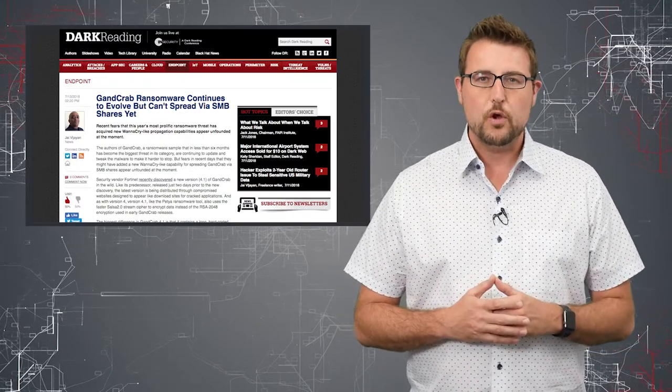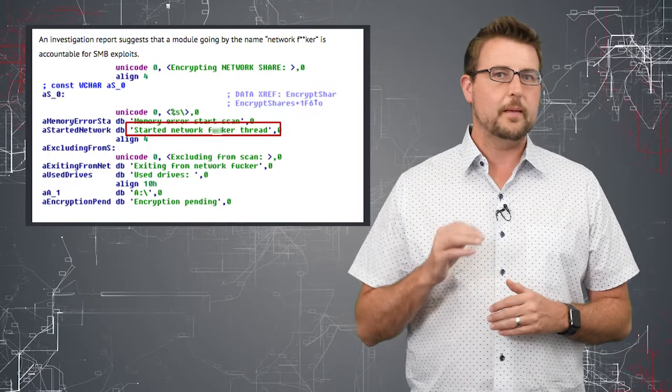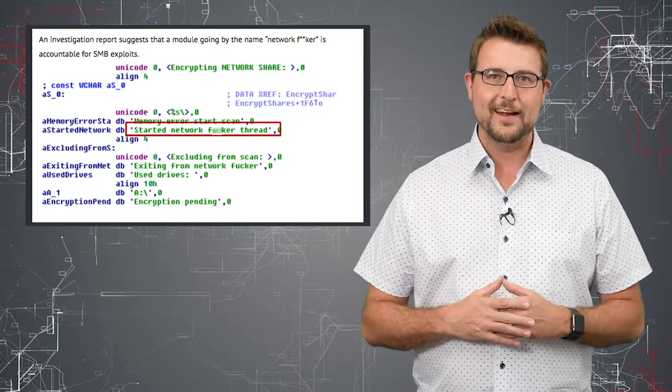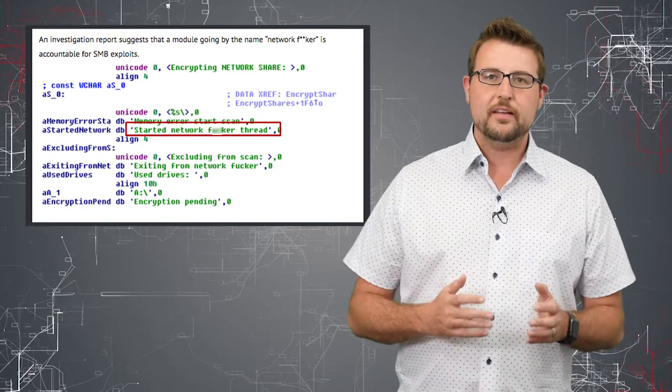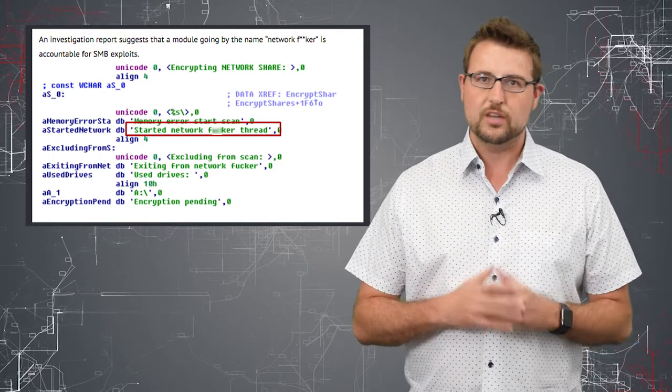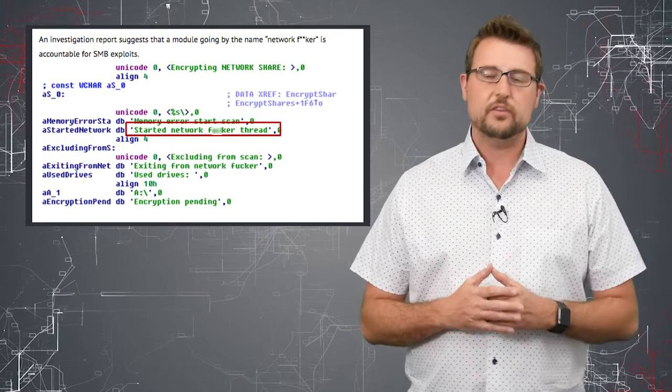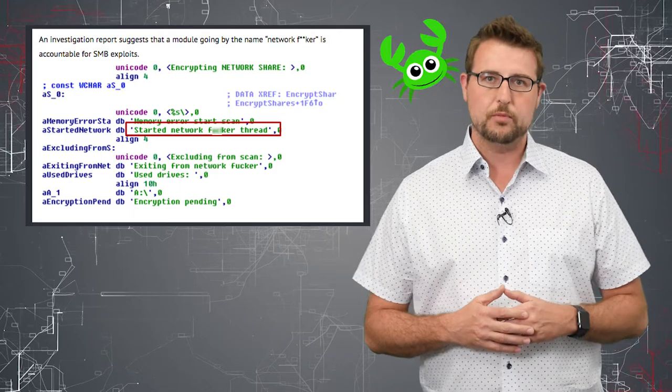While some researchers have noticed some code referencing a module called Network Fudger, using a little more inappropriate language, it doesn't appear that particular Network Fudger line does anything specific yet. It doesn't seem like there's any sort of SMB spreader attached to GandCrab yet.